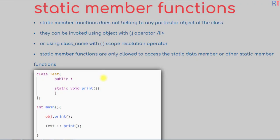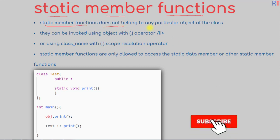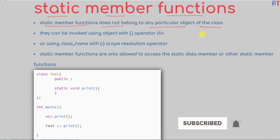In this video we're going to talk about static member functions in C++ programming. A static member function does not belong to any particular object of the class. In the example here, we have a class called 'test' and inside the class we have one static function called 'print'.